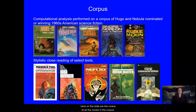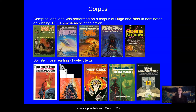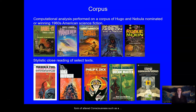Here on the slide are the covers of all the novels in the corpus. I'll speak about those in the lower row and the stylistic and thematic groupings they form in a little more detail. All these authors either won or were nominated for a Hugo or Nebula Prize between 1960 and 1969, and every novel contains passages representing some form of altered consciousness, such as a dream, drug trip, or mental illness, madness.